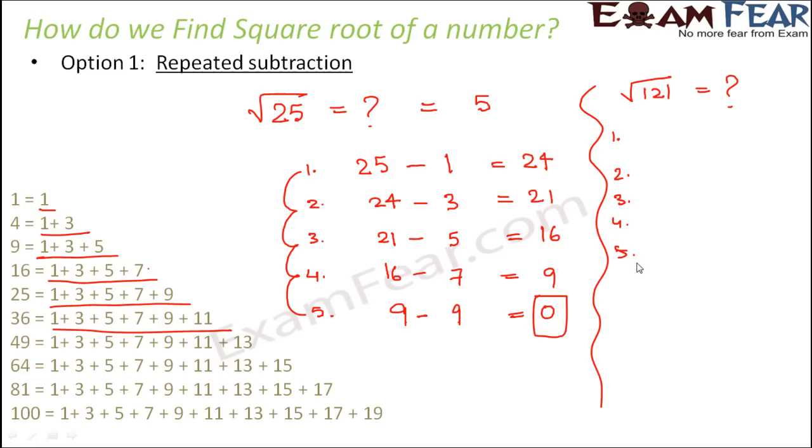So you are actually going to have some 11 steps like this. If I ask you to find out square root of 1600, you will have some 40 steps. So this method is not at all suitable for large numbers. So we need some other method.